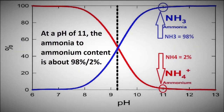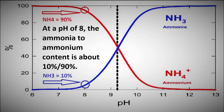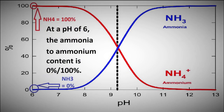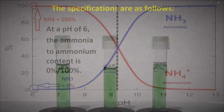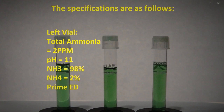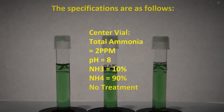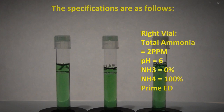Specifically, at a pH of 11, the ammonia to ammonium content is about 98% to 2%. At a pH of 8, the ammonia to ammonium content is about 10% to 90%. The left vial: total ammonia 2 PPM, pH 11, NH3 98%, NH4 2%, treated with Prime emergency dose. The center vial: total ammonia 2 PPM, pH 8, untreated control. The right vial: total ammonia 2 PPM, pH 6, NH3 0%, NH4 100%, treated with Prime emergency dose.